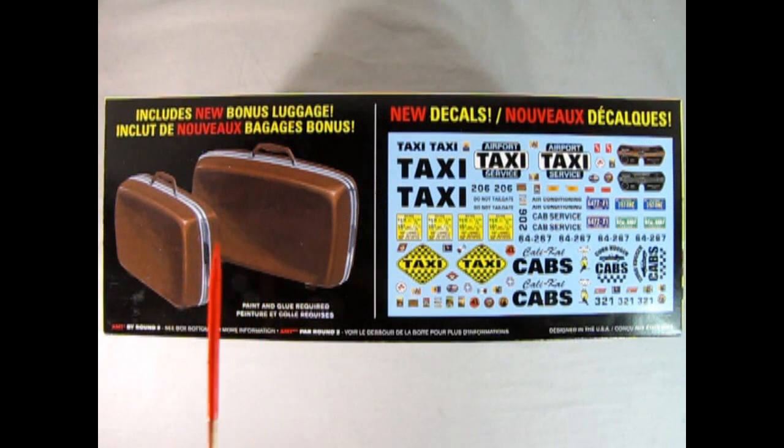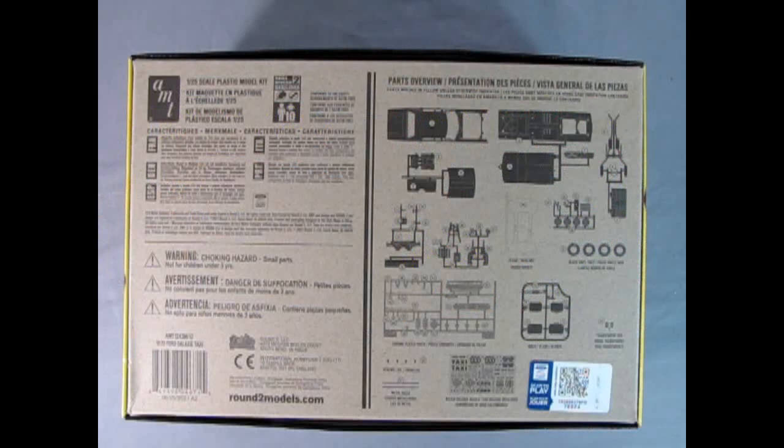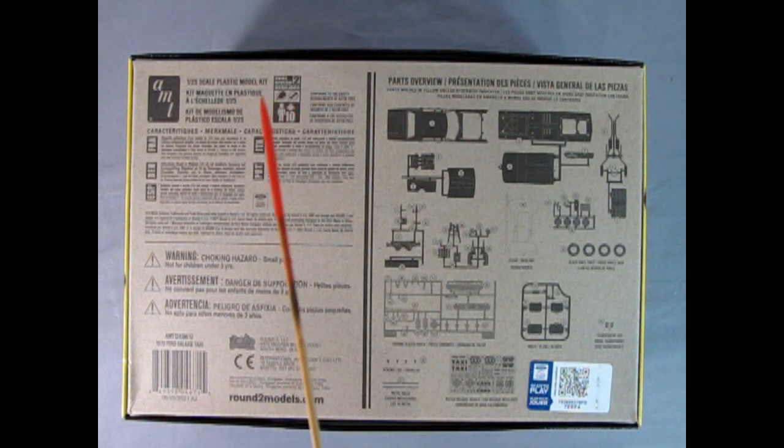On this side of the box, we also have two new bonus pieces of luggage, which of course are the 1970s style with the chrome band and the fake plastic leatherette that was on there back in the day. And we've got new decals for our taxi, which also include two different instrument panels, one being wood grain and one being the chrome style. The bottom of the box also has silhouettes of the parts included inside, as well as the chrome tree and that decal sheet and our luggage.